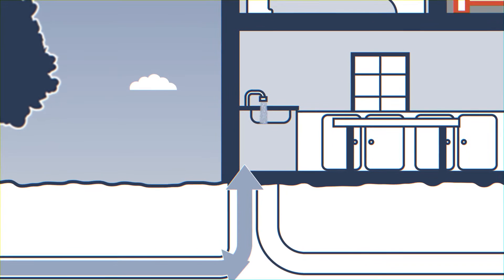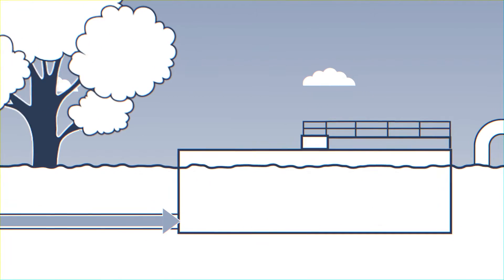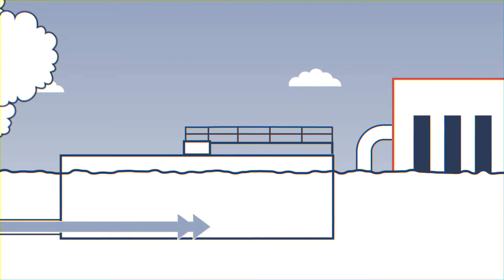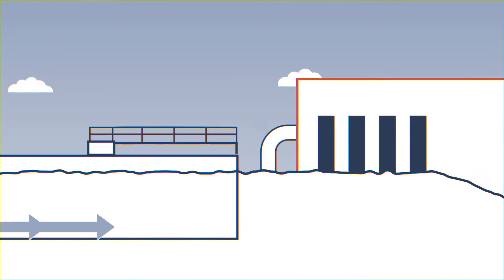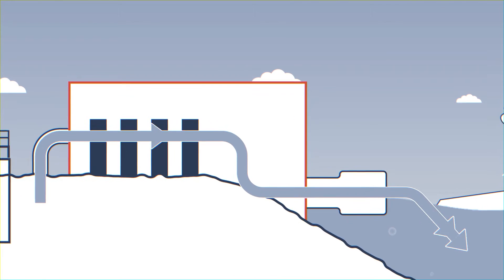When you run your sink or flush the toilet, the used water goes out through your pipes to a wastewater treatment facility. That gives it another thorough treatment and filtration before releasing the water out to the local creek or river.